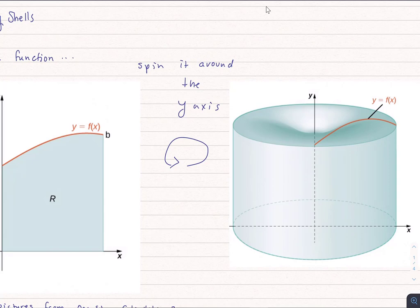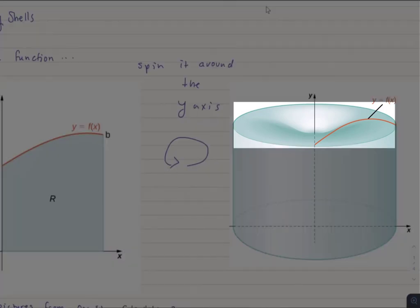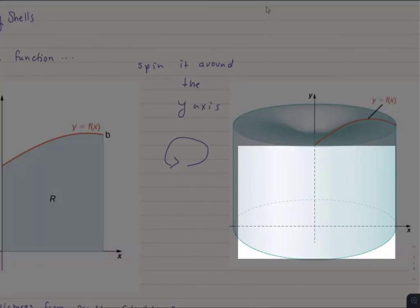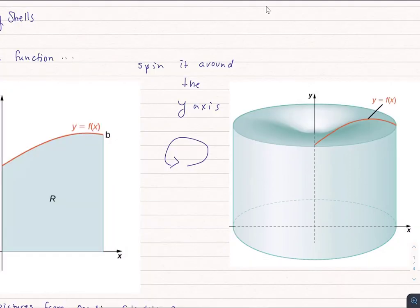If instead of slicing in terms of x, if we sliced it around y, the upper part we're going to have to use a washer method and then once we get below a certain point we can switch to the disk method. Anytime we can avoid doing things in two separate integrals we try to do that. So let's look at what we could do instead.